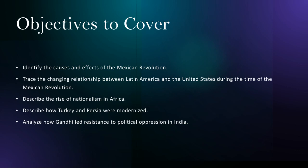Next, we'll be tracing the changing relationship between Latin America and the U.S. during the time of the Mexican Revolution. The revolution coincided with a period of increased U.S. interventionism in Latin America, driven by economic interests and concerns over political instability. While the U.S. initially supported Diaz's regime, it later shifted its support to other factions, such as Venustiano Carranza and Alvaro Obregón, who were perceived as more favorable to American interests. The revolution contributed to a more assertive and nationalist sentiment in Mexico, and led to greater tensions between Mexico and the United States.